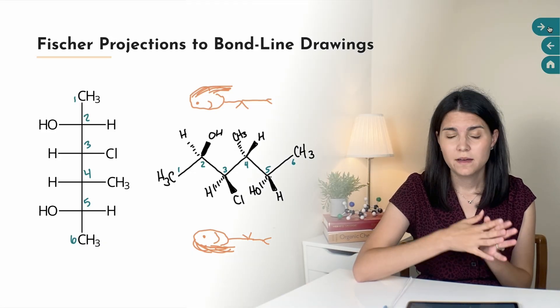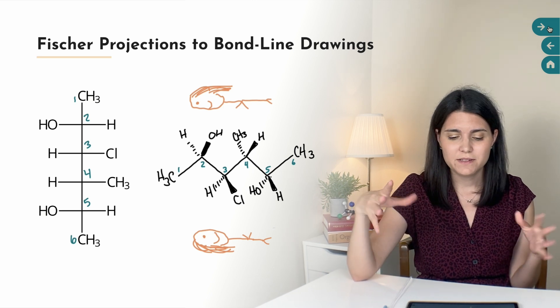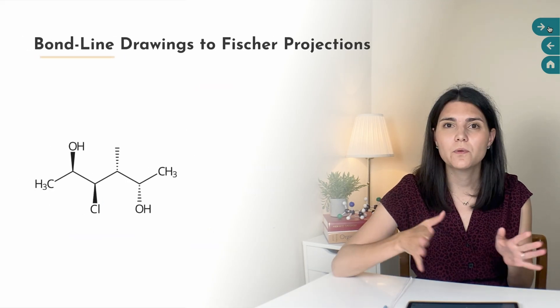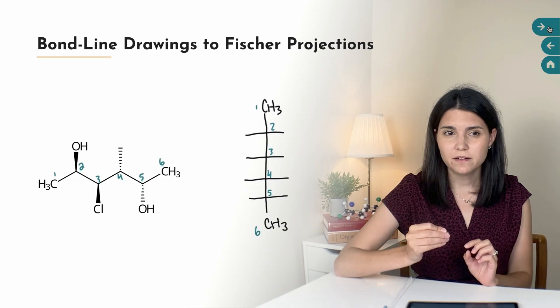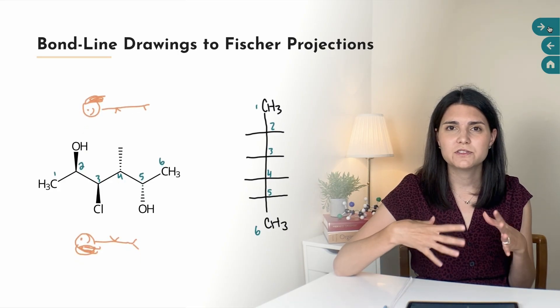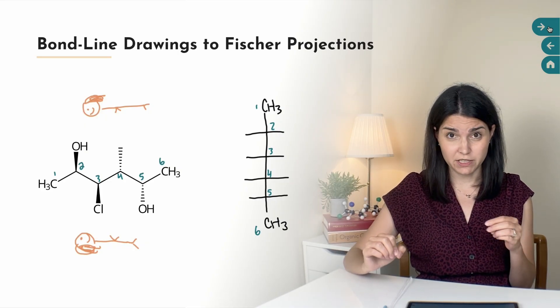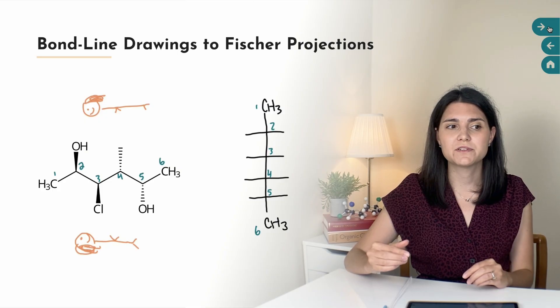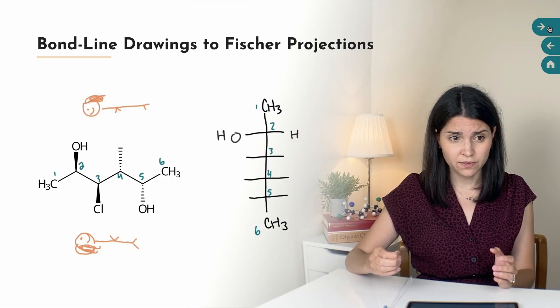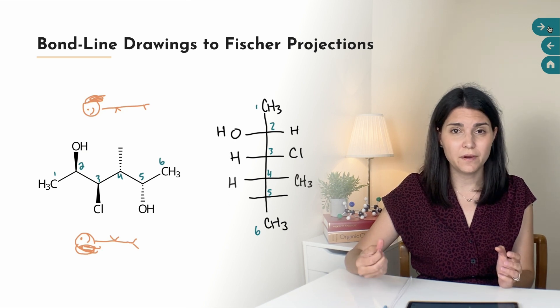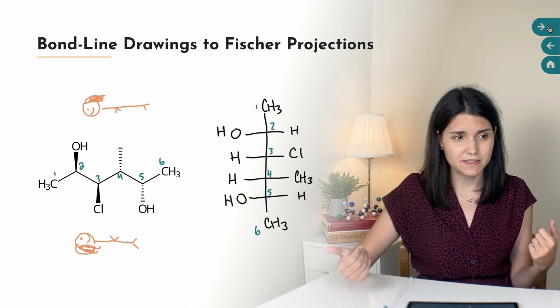And that is how it's done. This is not the only way to translate between these representations, but it's an effective approach. You can also do this in reverse: draw yourself above and below the skeletal structure, count the carbons and draw the Fischer projection framework, add in your top and bottom groups with the top matching where you drew your head, then work down the carbons as dance partners — imagine what you'd be holding if you were above or below the molecule and translate that onto the Fischer projection as if you were standing in front of it.